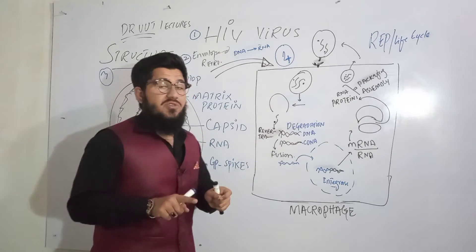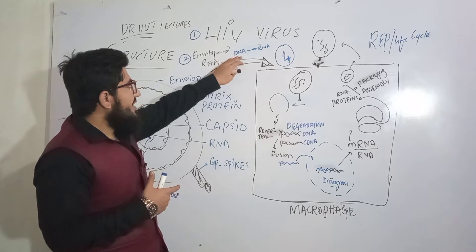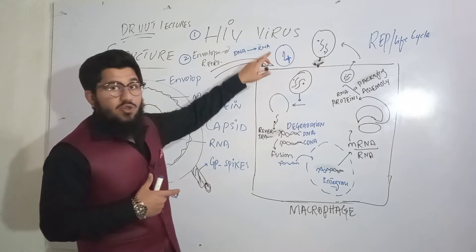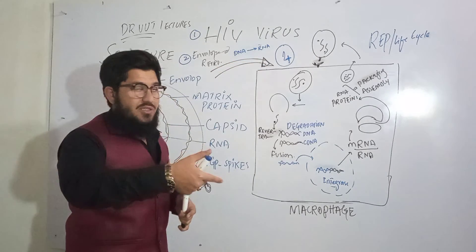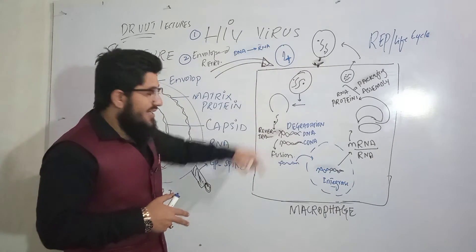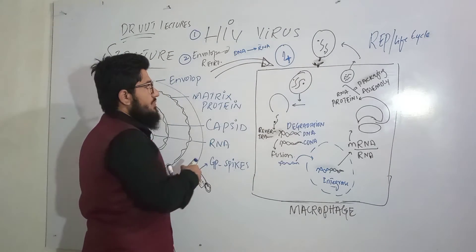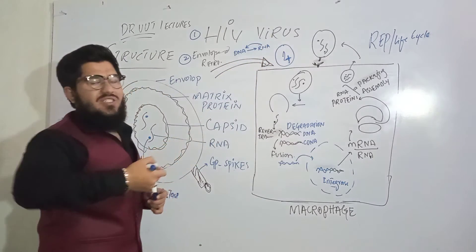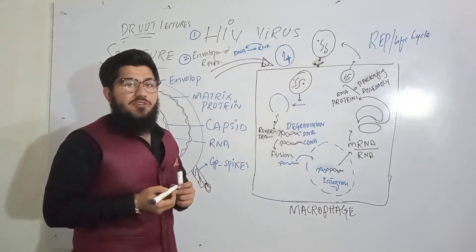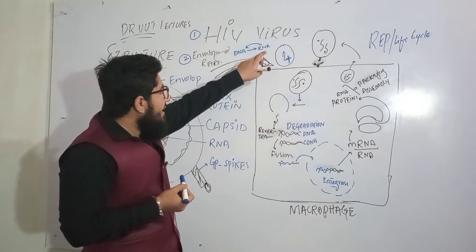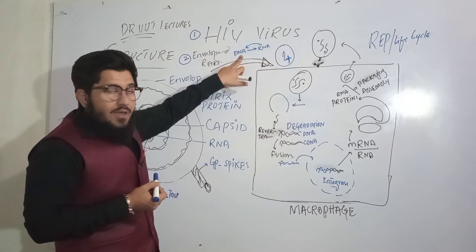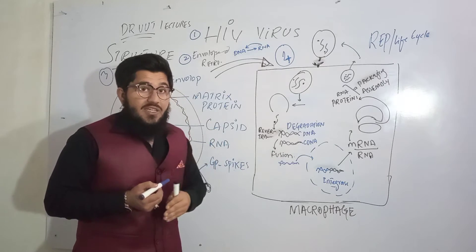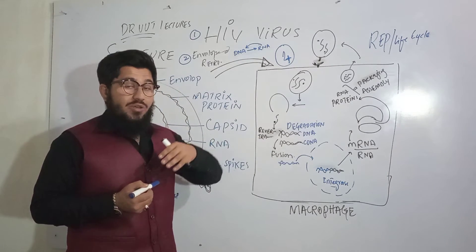Why is this enzyme named reverse transcriptase? Normally, transcriptase transcribes DNA into RNA. But here, the reverse is happening — DNA is being synthesized from RNA. This mechanism is done by an enzyme that is also a transcriptase, but doing the reverse job — reverse transcription — converting RNA into DNA.